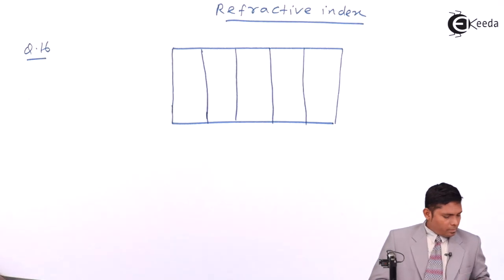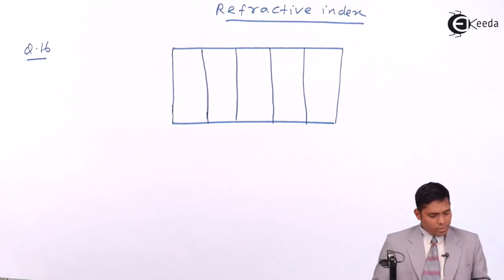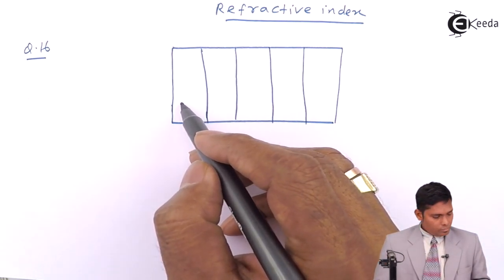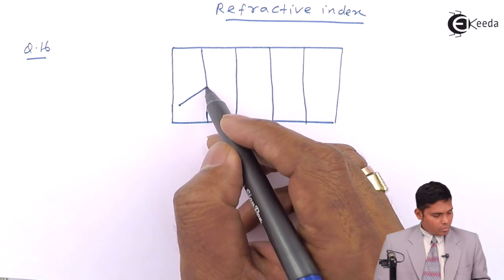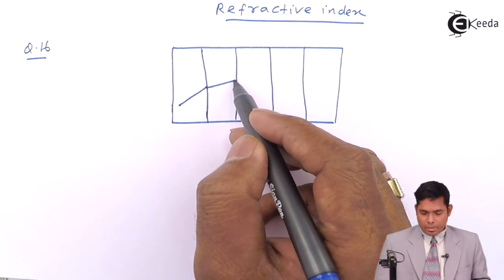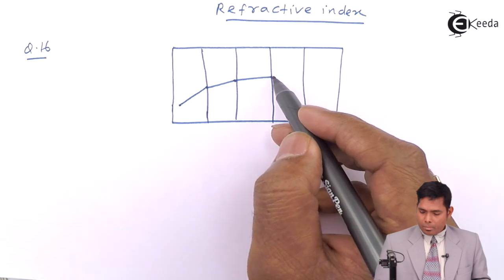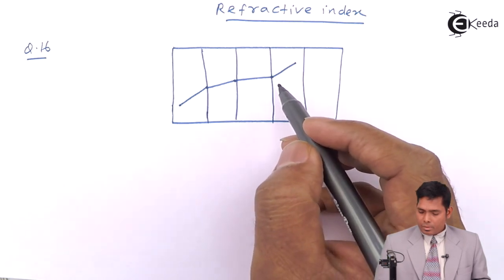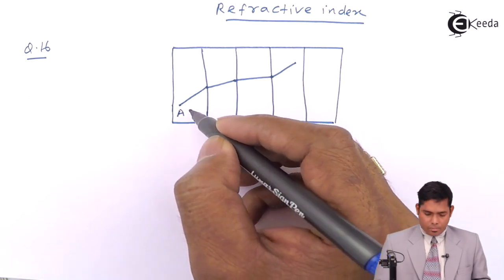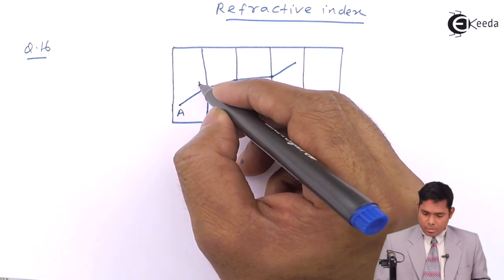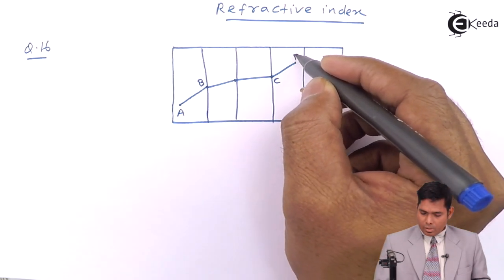This is A, B, C, D, like that. The ray goes like this, then bends like this, then bends like this, then bends like this. This is A, B, this is C and D.